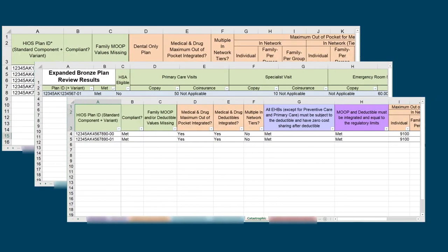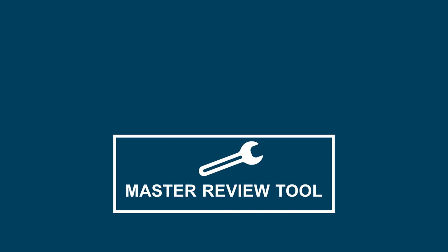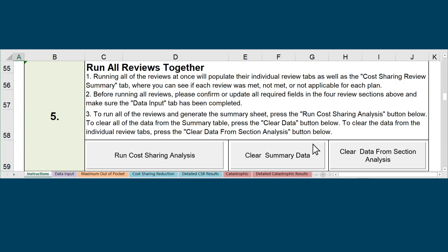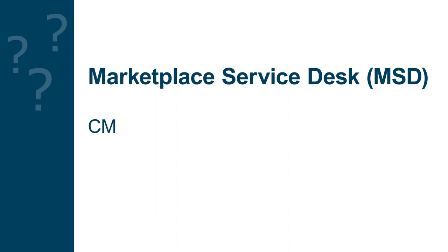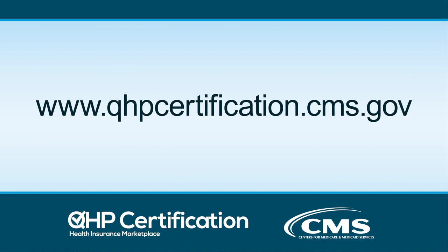Review all results tabs to ensure all errors found by the tool were corrected. Then reimport the corrected Plans and Benefits template into the Master Review Tool. Save and reimport the Master Review Tool into the Cost Sharing Tool. In Step 5 on the Instructions tab, click Clear Summary Data to clear all of the data from the summary tab, and Clear Data from Section Analysis to clear the data from the individual review tabs. Then click the Run Cost Sharing Analysis button. The Cost Sharing Review Summary tab now shows that all plans meet the overall cost sharing compliance standards. If you have questions regarding the QHP application review tools, please contact the Marketplace Service Desk at CMS-FAPS@CMS.HHS.gov or 855-CMS-1515. For more information about the QHP certification process, visit www.qhpcertification.cms.gov.